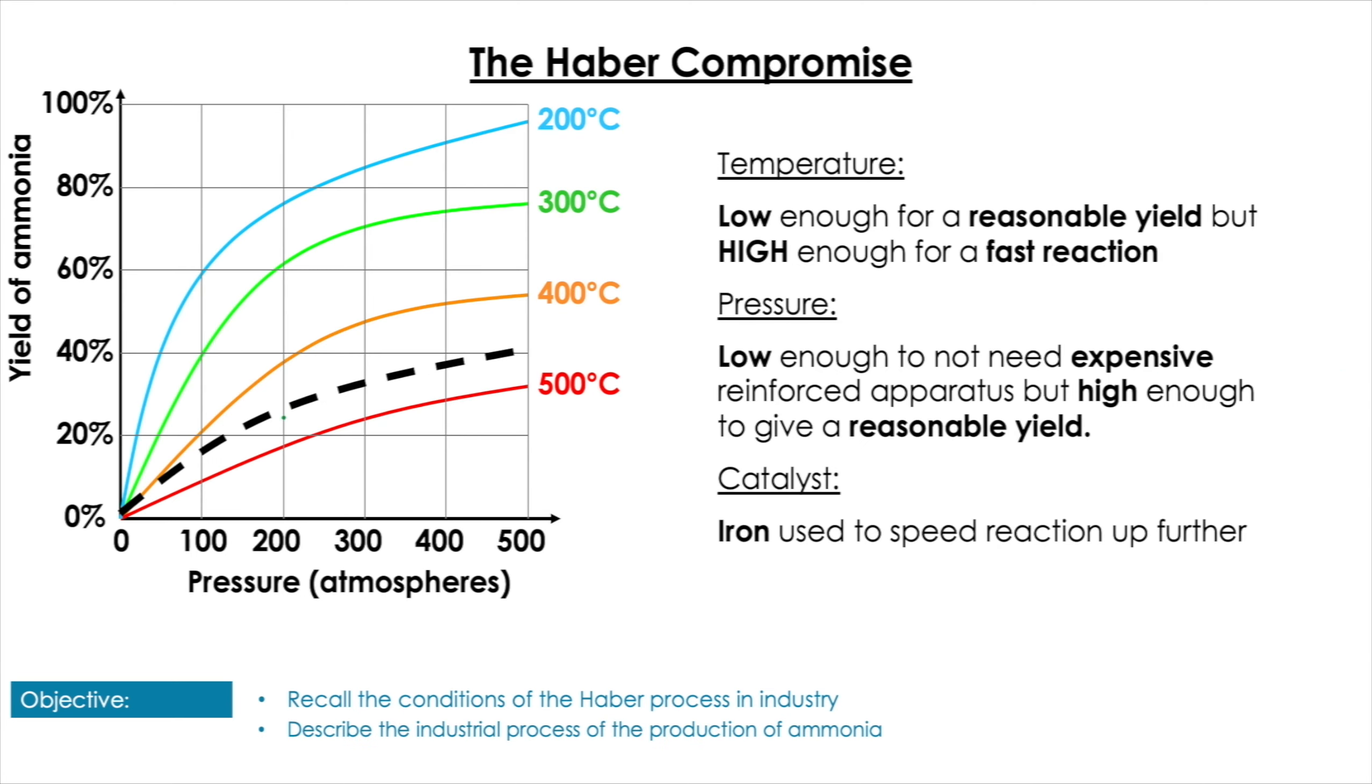So we can visualize this by plotting the yield of ammonia against the pressure. You can see that we've got lines for 200, 300, 400, 500 degrees as we go through the pressures. This line I've just overlined here is the 450-degree mark. Now at 200 or 250 atmospheres around there, you can see we're only getting about 30% yield. However, at the temperature we're using, the rate of reaction is going to be fast enough that we get a good yield.